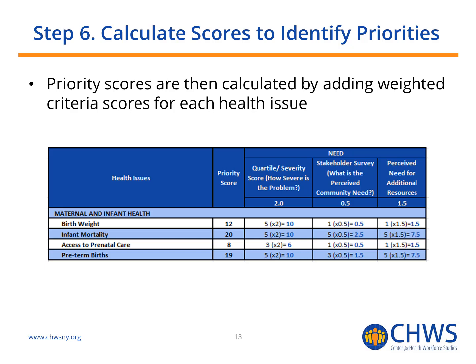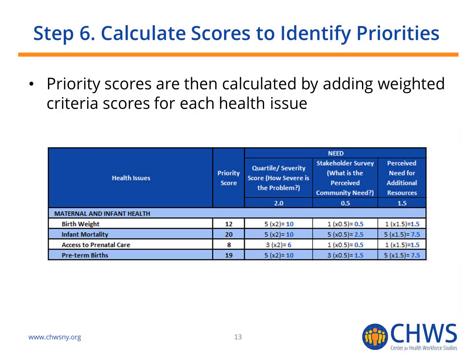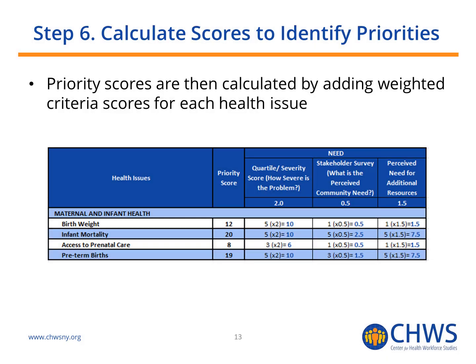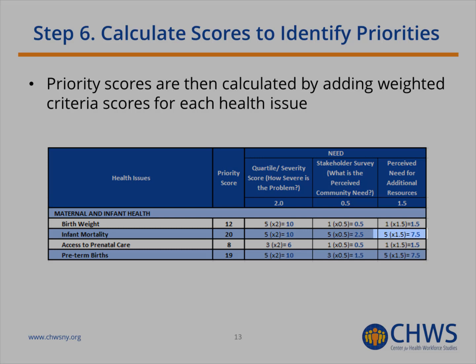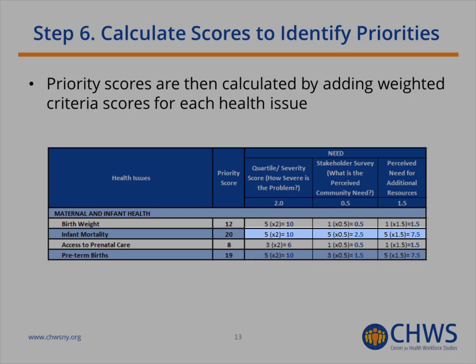Creating a priority score is a matter of multiplying the criteria score by the criteria weight and then adding all the sums together. In this example, infant mortality has a severity score of 5 and a criteria weight of 2 — 5 times 2 equals 10. The Stakeholder Survey criteria also has a score of 5, but a weight of only 0.5, giving a score of 2.5. The perceived need for additional resources column receives a score of 7.5. Adding these together: 10 plus 2.5 plus 7.5 equals 20, making infant mortality the top priority with the largest total score.